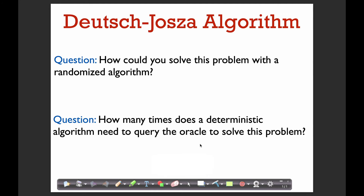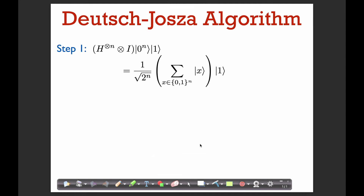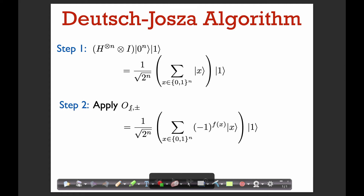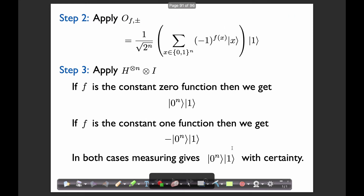So this problem is hard for classical deterministic algorithms. How does the Deutsch-Jozsa algorithm work? We start in the very typical way: we create a uniform superposition on the first register, then we apply a phase oracle, which brings us to a certain state, and then we again apply Hadamard on the first register. Let's see what happens when we do that.